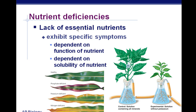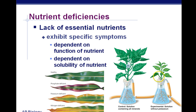Nutrient deficiencies — a lack of essential nutrients — exhibit specific symptoms. You don't have to know all of these specifically. A healthy leaf is green. A phosphate deficiency shows a purple edge on leaves; potassium deficiency causes a red edge; nitrogen deficiency causes a red middle with green edges. A botanist can diagnose the deficiency from leaf color. This is determined through controlled experiments where one nutrient is deliberately withheld and the resulting leaf changes are observed as the dependent variable.